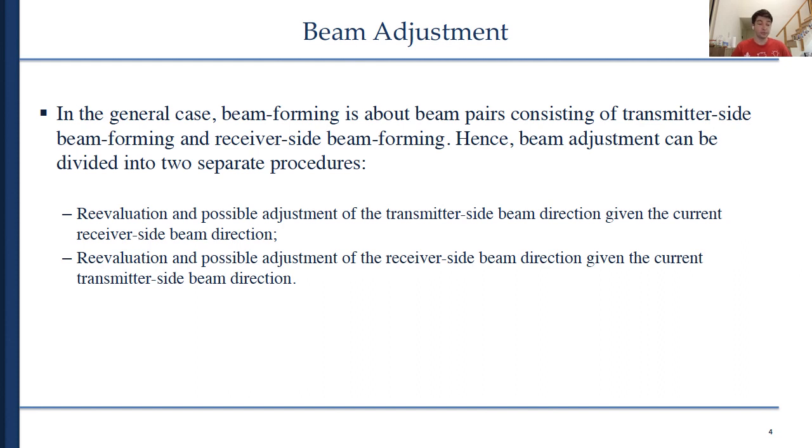The base station can coordinate interference. There is a whole topic called interference coordination and interference cancellation, ICIC. You can take a look—there are many research works in that direction. So once it's always carried out at the base station and beam correspondence is assumed, then during the uplink the user uses exactly the same beam direction.